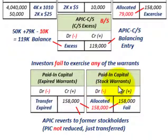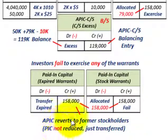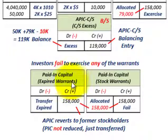We debit or reduce paid-in capital for stock warrants by $158,000 and credit paid-in capital for expired warrants by $158,000. The additional paid-in capital reverts to the former stockholders. The total paid-in capital is not reduced — it's just transferred. We're simply noting in the equity accounts the difference between the original stock warrants and the expired warrants.